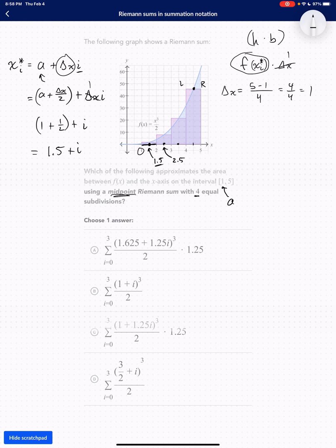This is what you're going to be plugging in to the f of x. So now we're looking at what f of x is, and I'm going to plug it in. So we have 1.5 plus i, raise that to the third power, divided by 2. And we don't even care about multiplying it times 1, so this is it. This is what we would have to plug into our sigma notation.